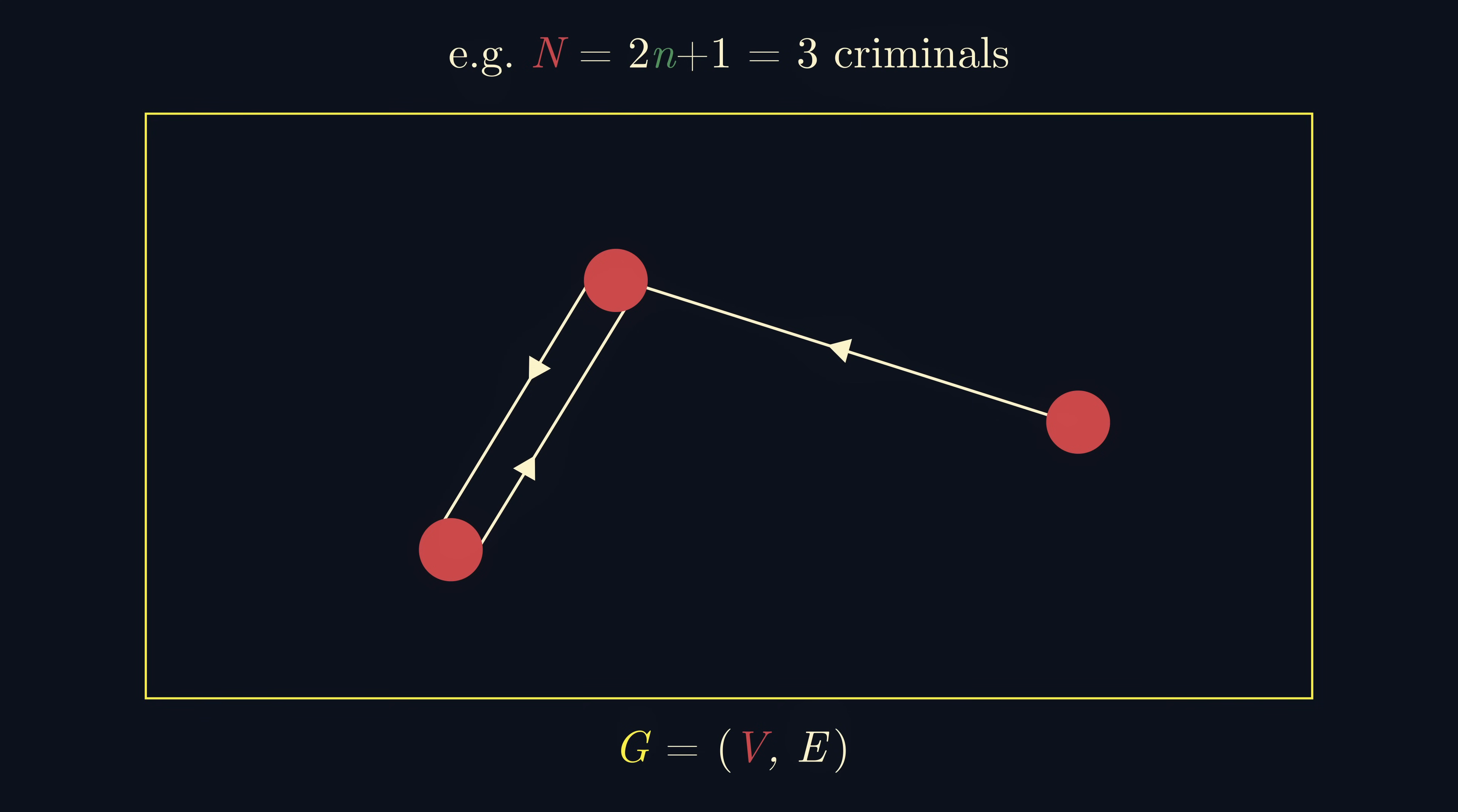Now looking back at the problem, the first question you might have is how is oddness important? If you think about it for a bit, you may realize with an even number of criminals we can pair them up in such a way that each pair look at each other, a sort of staring contest, so no criminal is left unwatched.